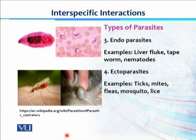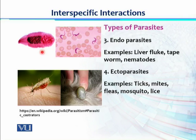A third type is endoparasites — parasites which live inside the body of their host. Examples include liver fluke, trypanosoma, tapeworms, and different nematodes. They stay inside the body of the host, and their presence and location being inside is why they are called endoparasites.